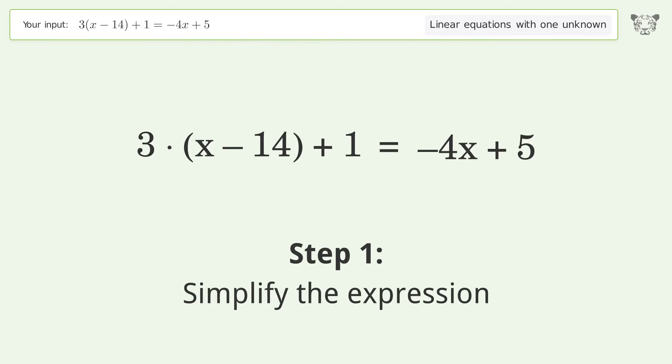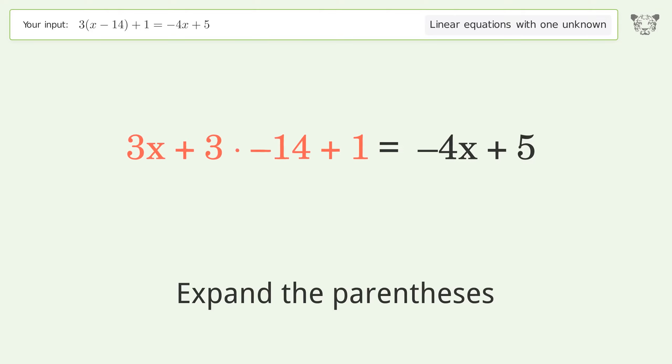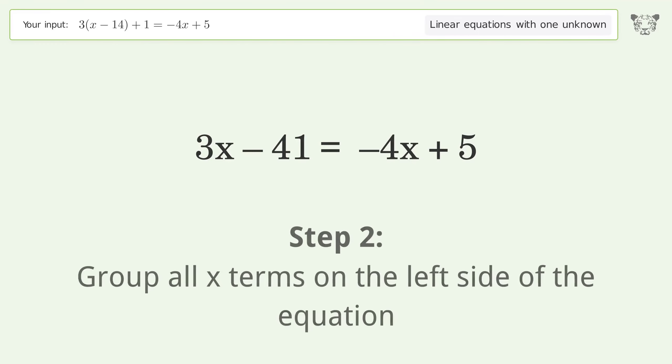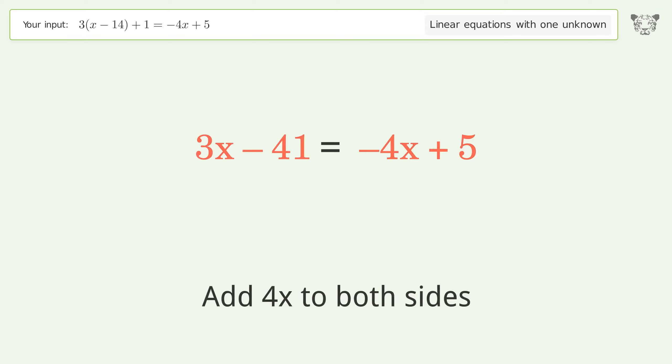Simplify the expression. Expand the parentheses. Simplify the arithmetic. Group all x terms on the left side of the equation. Add 4x to both sides.